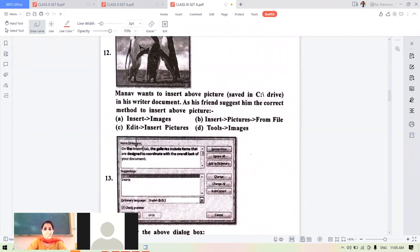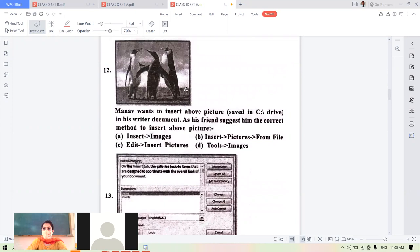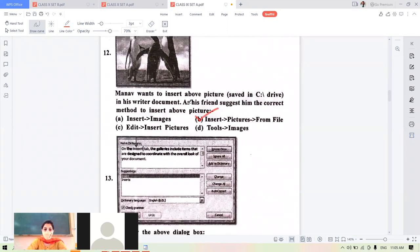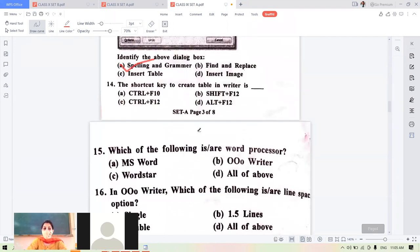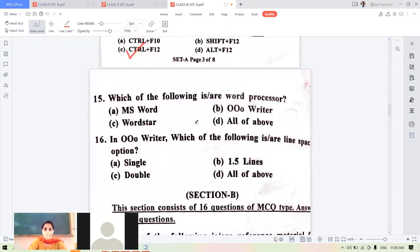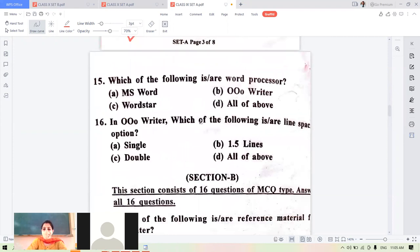Manav wants to insert a picture. His friend suggests him the correct method. The method for inserting the picture is insert menu picture from file. You can see the spelling suggestions are appearing here. This is the spelling and grammar feature. The shortcut key to create a table in writer is Control plus F12.